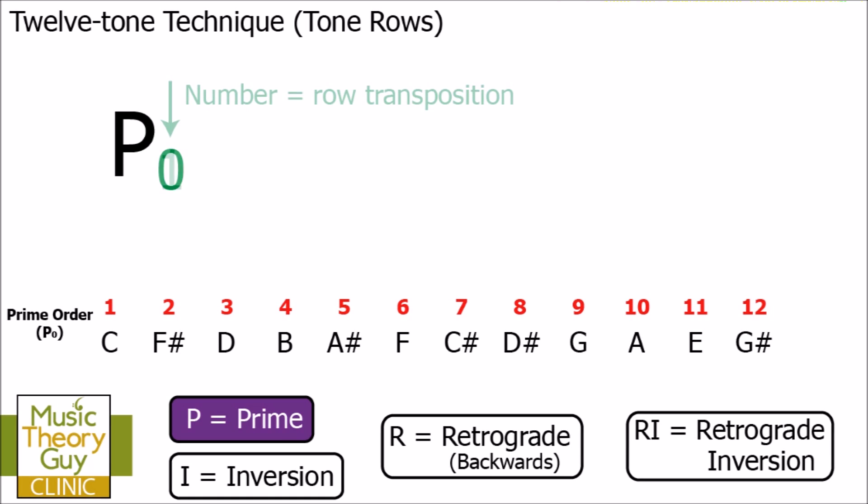So, let's have a look at what happens if we change that number. This time, let's have a look at P-1. All that means is move all of P-0, the prime order, up by one semitone or one half step. P-2 would mean move all of P-0 up by two semitones or two half steps. P-3 would mean move all of P-0 up by three semitones or three half steps, and so on and so on.